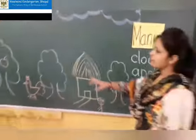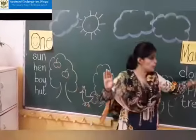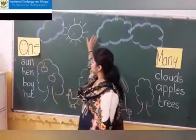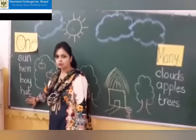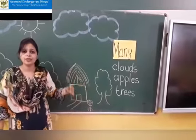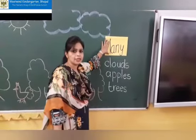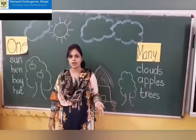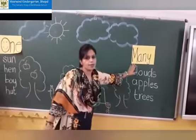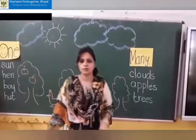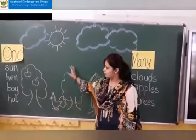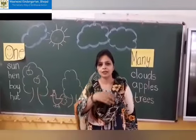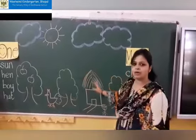So children, do you know why we have written these words under two different headings? The first heading is one — anything that is one in the picture we wrote in that column. And the things that are more than one go in the other column. I hope now you all must have guessed which topic we are going to study today. The new concept is one and many. You can do this activity at home — your parents can give you instructions, and with different pictures you can draw and then find out the things that are one and the things that are many.